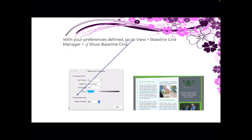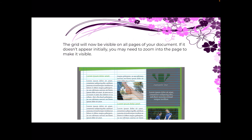With your preferences defined, go to View, Baseline Grid Manager, and tick Show Baseline Grid. If you've got your display threshold set correctly, you will see the lines across the page. Sorry about that little background noise. The grid will now be visible on all pages of your document. If it doesn't appear initially, you may need to zoom into the page to make it visible.